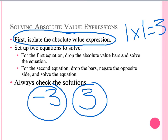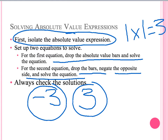In other words, for the first equation, we are going to drop the absolute value bars and solve the equation. For the second equation, we will drop the absolute value bars and negate the opposite side and solve the equation. Negating the opposite side means turning the number to negative. And once we have done all this, we are going to want to check the solutions to make sure our answer is correct.